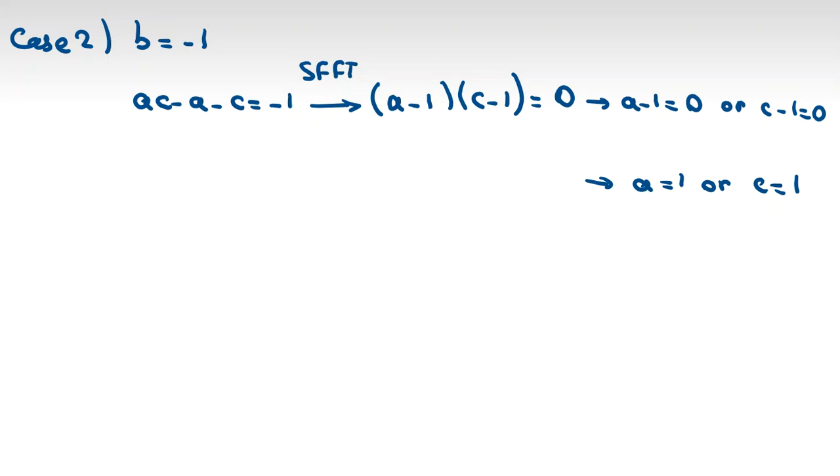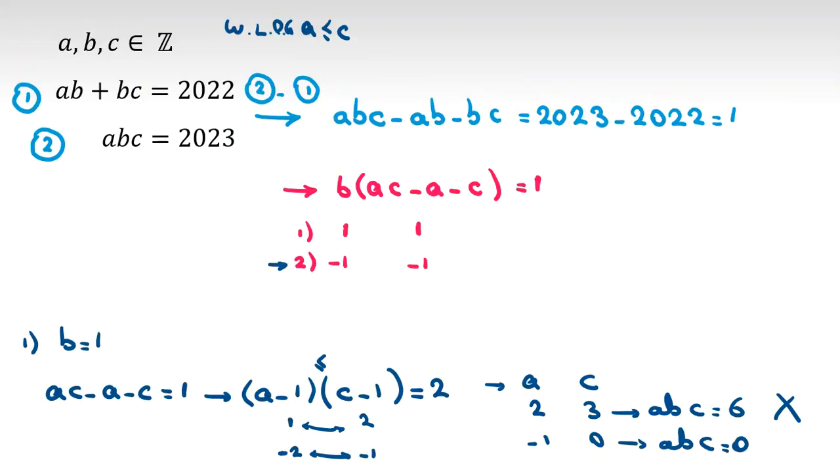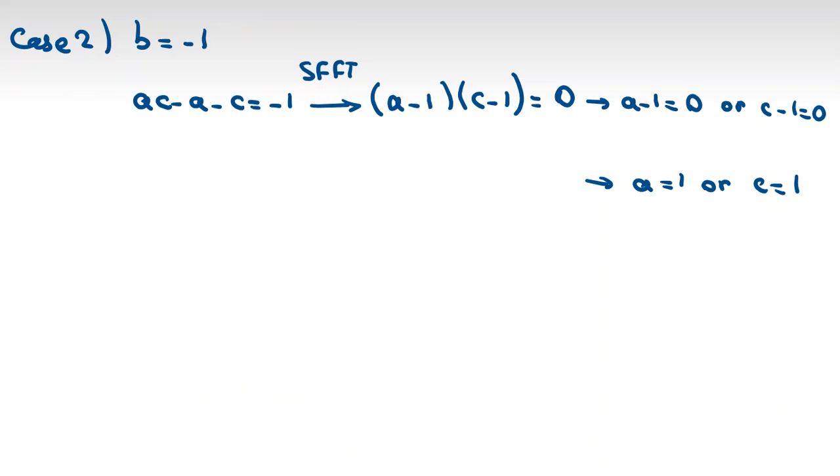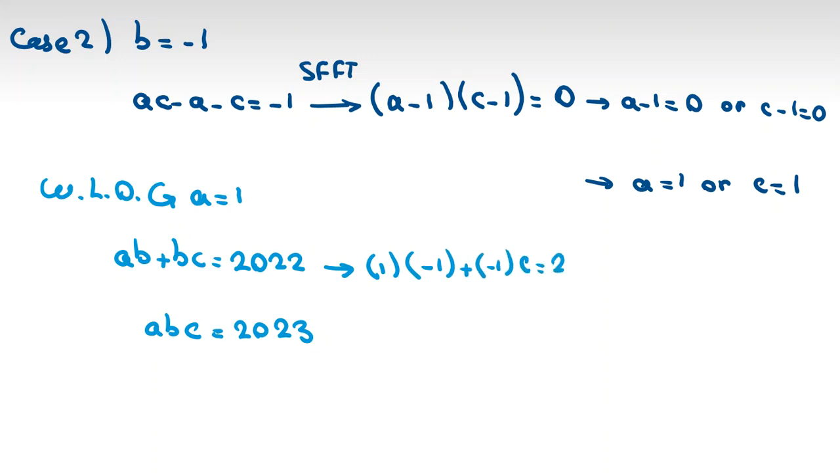Without loss of generality, suppose A is 1, because A and C are symmetric. Let's replace here. AB plus BC equal to 2022, ABC equal to 2023. Without loss of generality, suppose A is 1, B is negative 1. So 1 times negative 1 plus negative 1 times C equal to 2022. And second equation: A is 1 times B, which is negative 1, times C equal to 2023. So negative C is 2023, so C is negative 2023.